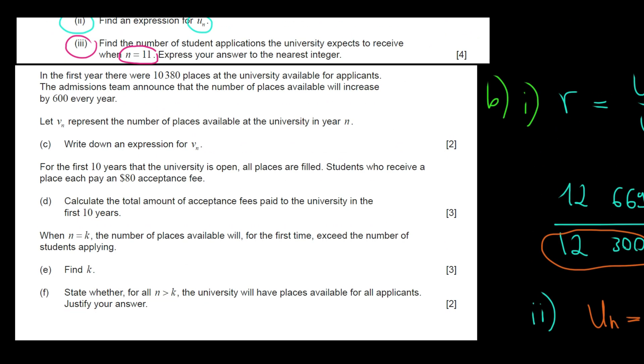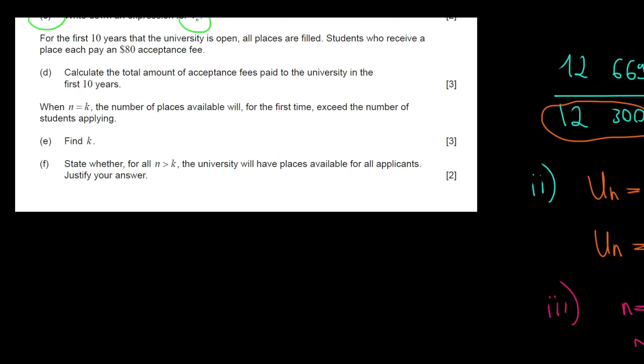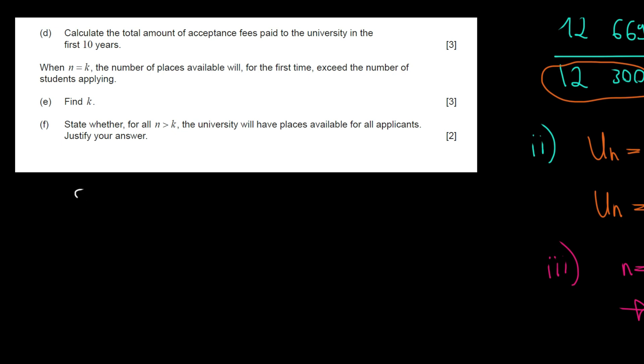Let's have a look at part C. In the first year, there were 10,380 places at the university available for applicants. The admissions team announced that the number of places available will increase by 600 every year. VN is going to be the number of places available at the university in year N. Write down an expression for VN. We have a sequence again, but this time arithmetic. Why?